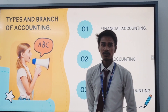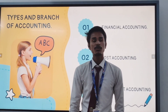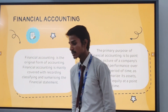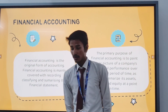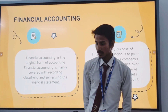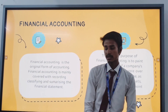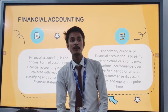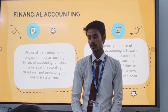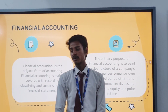Now I will cover the types and branches of accounting. The first type is financial accounting, the second is cost accounting, and the third is management accounting. Financial accounting is the original form of accounting, mainly concerned with recording, classifying, and summarizing financial statements. The primary purpose of financial accounting is to paint a clear picture of a company's operational performance over a specified period of time.